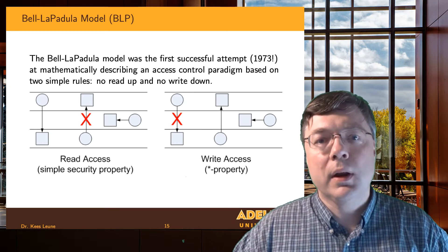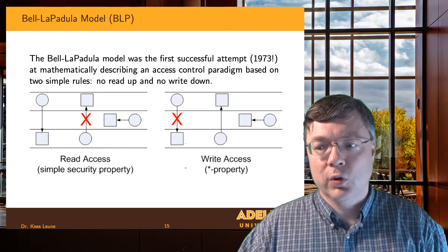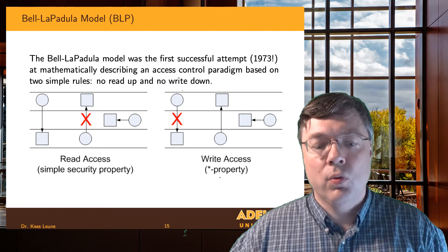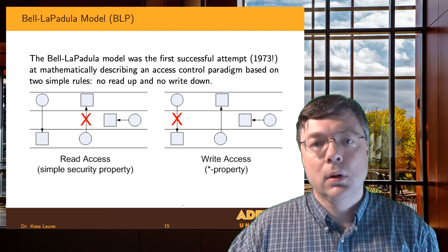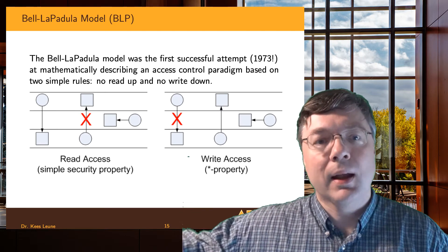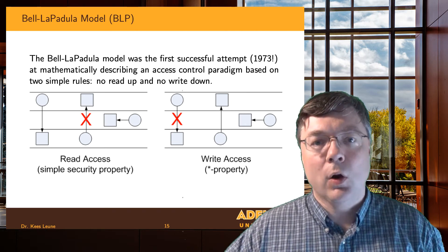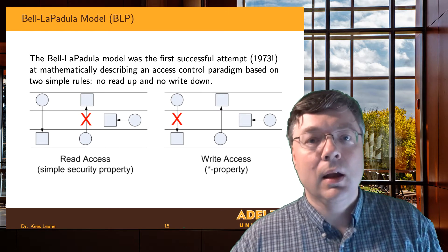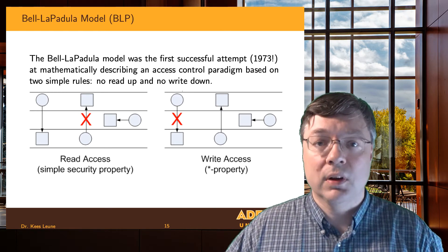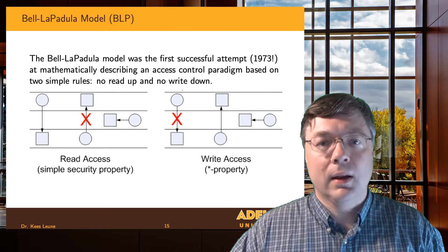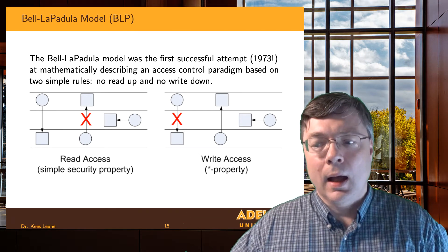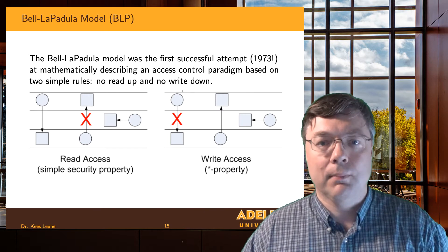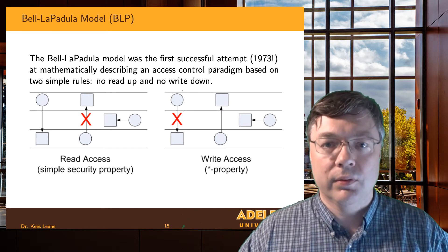No read up, also known as the simple security property, means that if I as a user am cleared up to secret, I cannot read above my clearance level. So anything I can read only goes up to the secret level — I cannot access any materials classified as top secret. This provides a secrecy or confidentiality model: I can read anything at or below my level, but nothing above my clearance.